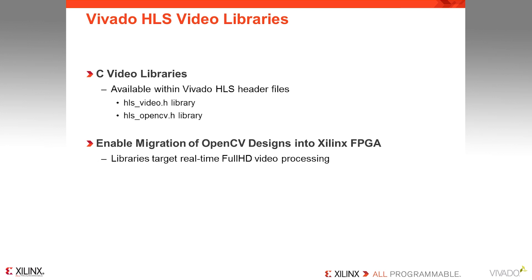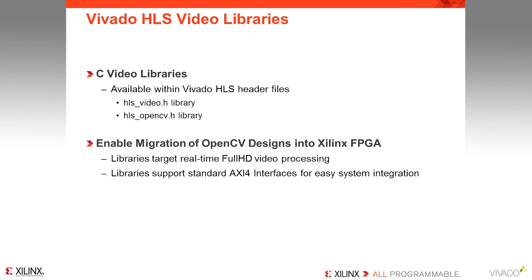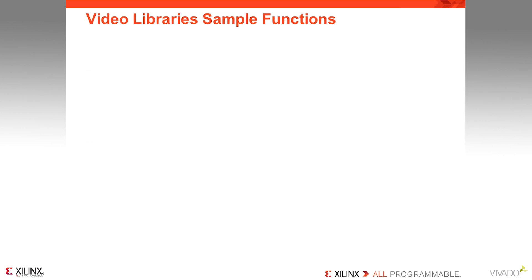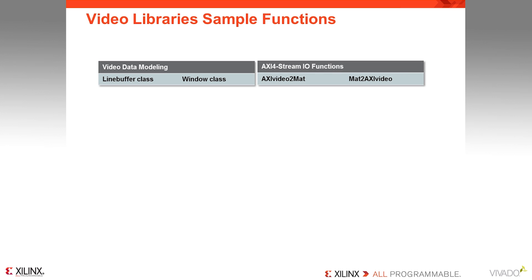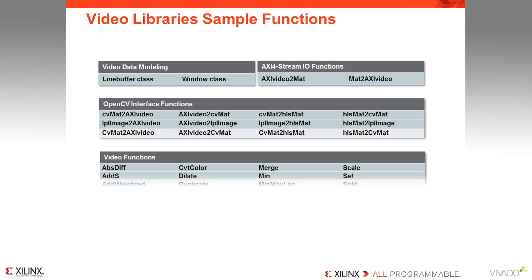The library functions are compatible with equivalent functions in the OpenCV library, and are guaranteed to synthesize into a high-performance FPGA implementation, capable of processing full HD video at the rate required for real-time viewing. The OpenCV functions can easily be replaced by the HLS video library equivalents. The video libraries also provide functions to support the implementation of AXI4 interfaces, ensuring easy system integration and seamless communication between the CPU and the hardware. A complete list of functions is provided in the Vivado HLS user guide. The library includes LineBuffer and memory window classes for modeling video algorithms, AXI4 stream IO functions for easy system integration, OpenCV functions for image data transformations, and video functions at the core of the image processing.